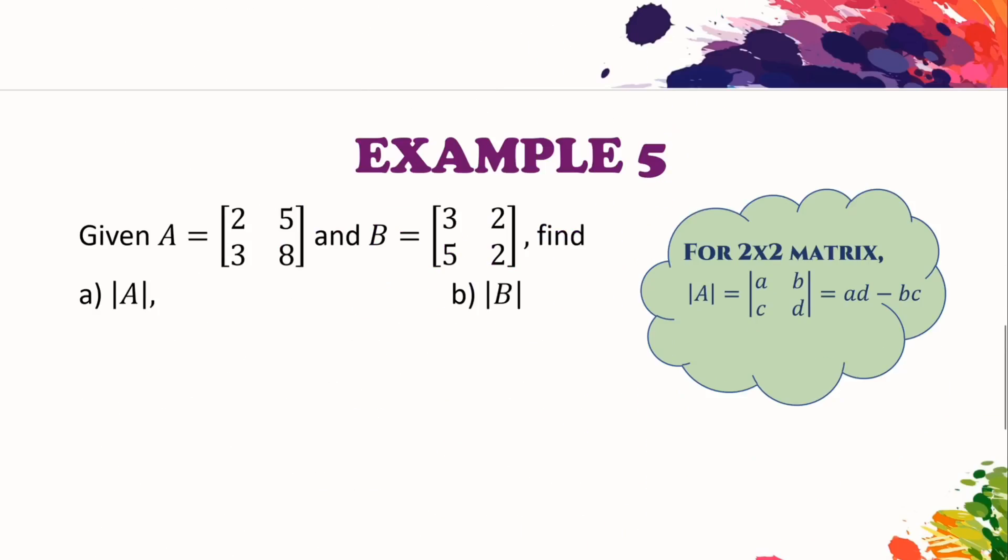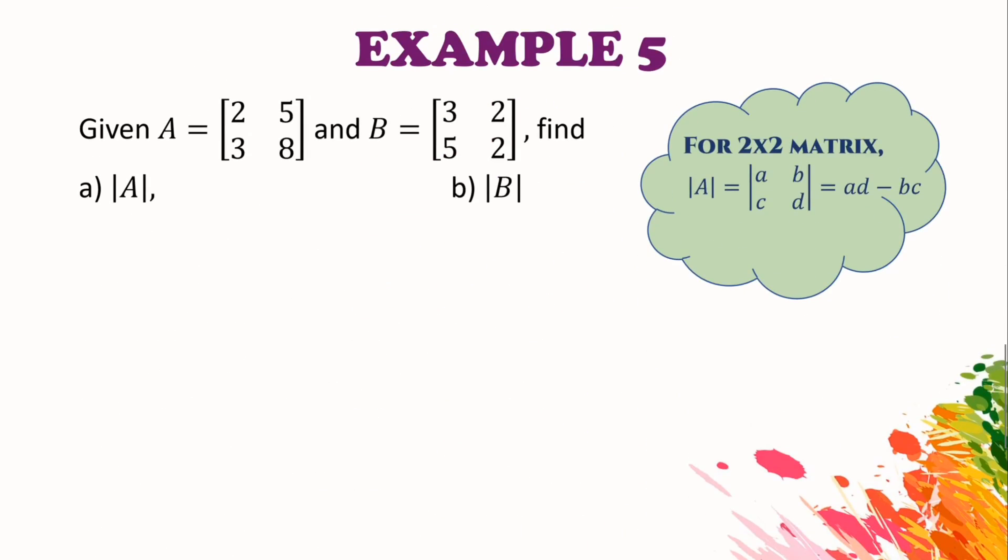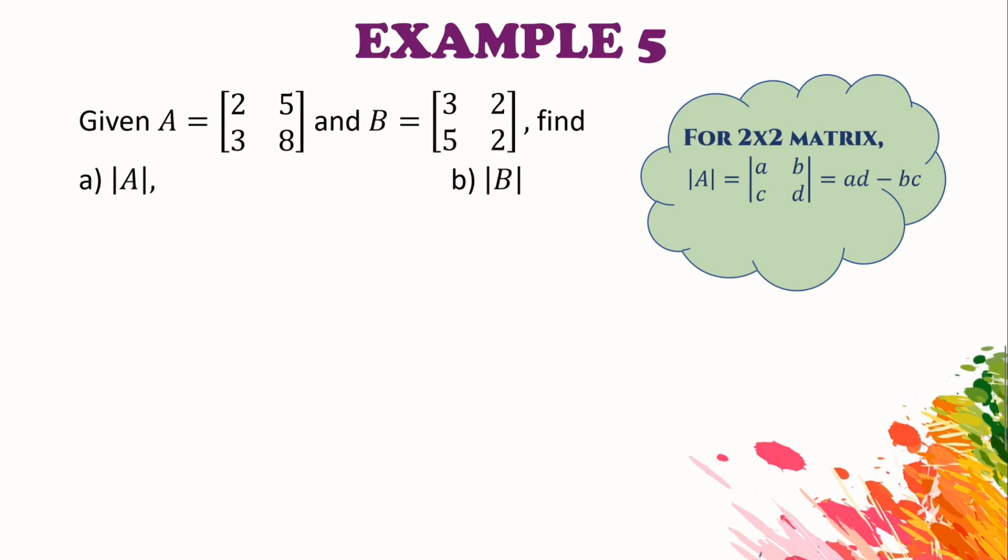Now let us take a look at how to find the determinant of a 2x2 matrix. The formula is easily remembered, which is ad minus bc. So you multiply a times d minus b times c.